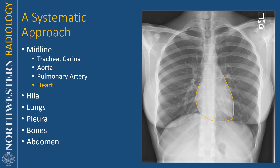Then I look at the heart: the left atrium, the left ventricle. The inferior border is usually not something you can see on a frontal chest x-ray because of the similar density between the heart and the diaphragm. So inferiorly, the heart touches the diaphragm and you don't actually see this border. Then I look at the right atrium and, of course, the SVC.